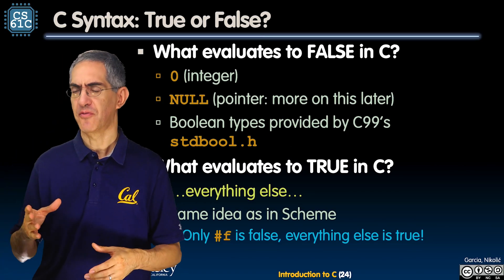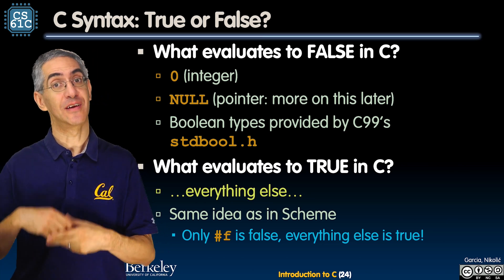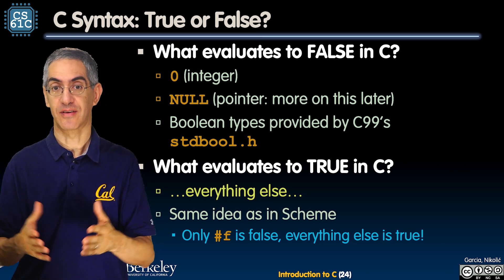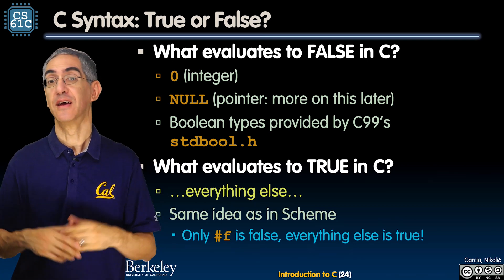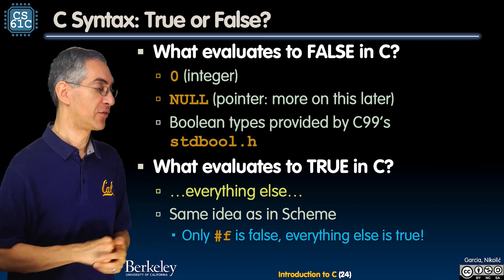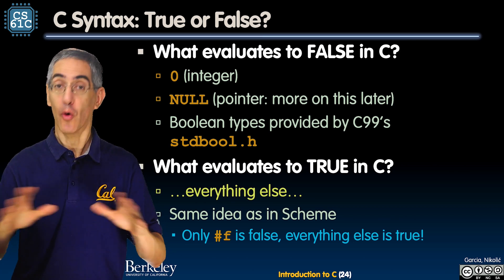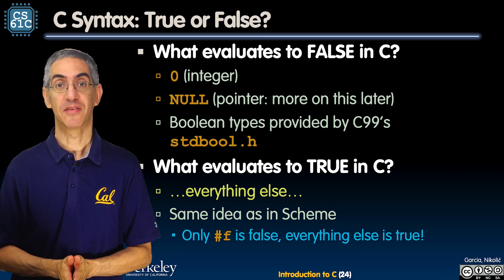So the first is we talked about before that there's a new way in C99 to have a boolean type, but if you don't include that you just had to go with kind of more ANSI C. What is true and what's false? So what's false in C is zero. Only zero. Zero is false. That's it.